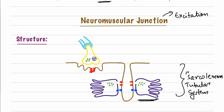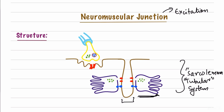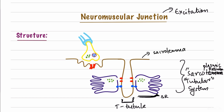The sarcolemma is the plasma membrane of a skeletal muscle cell, shown here in violet. Then we have the T-tubules, which are T-shaped invaginations of the sarcolemma. The sarcoplasmic reticulum — which is the endoplasmic reticulum of muscle fibers — is a separate structure closely associated with the T-tubules.